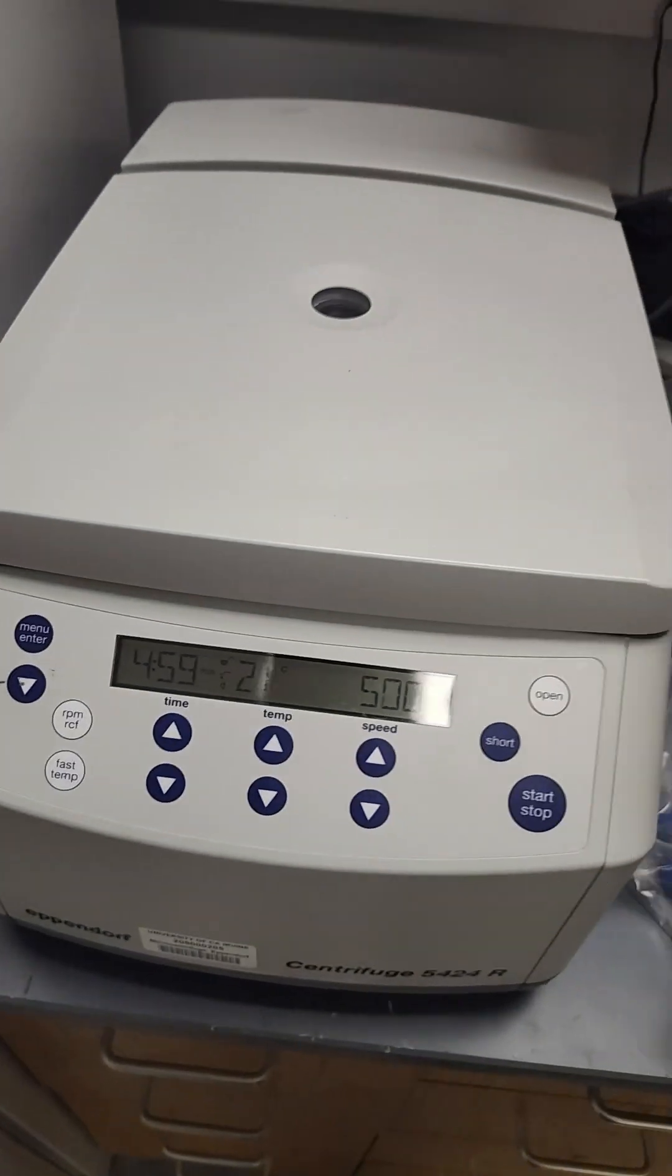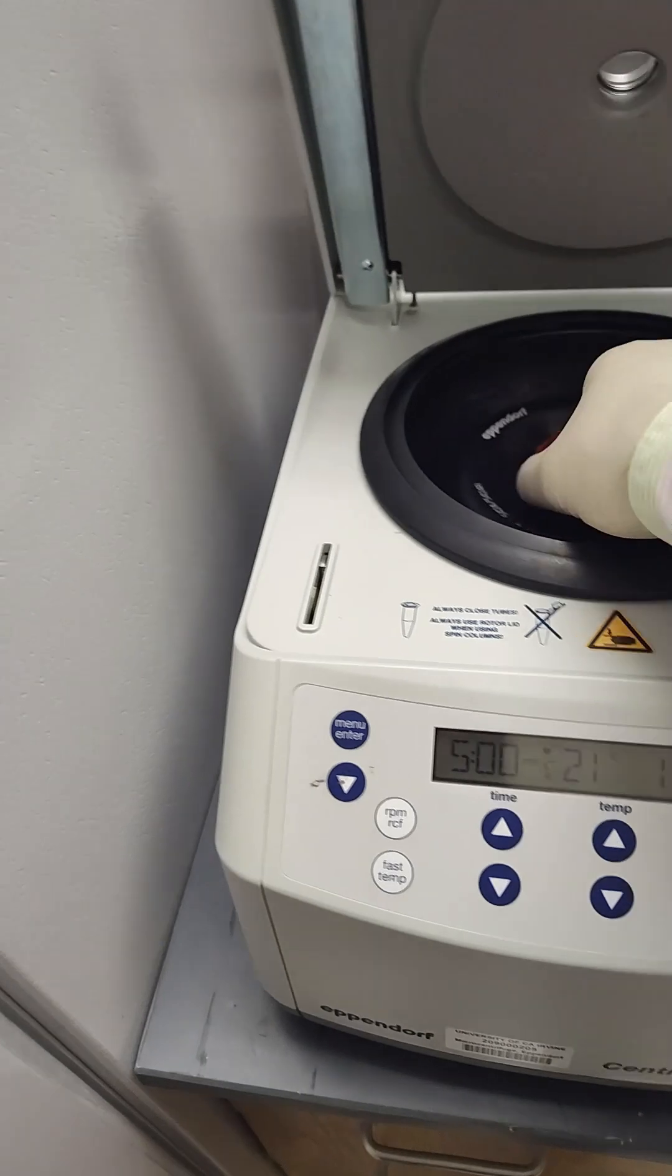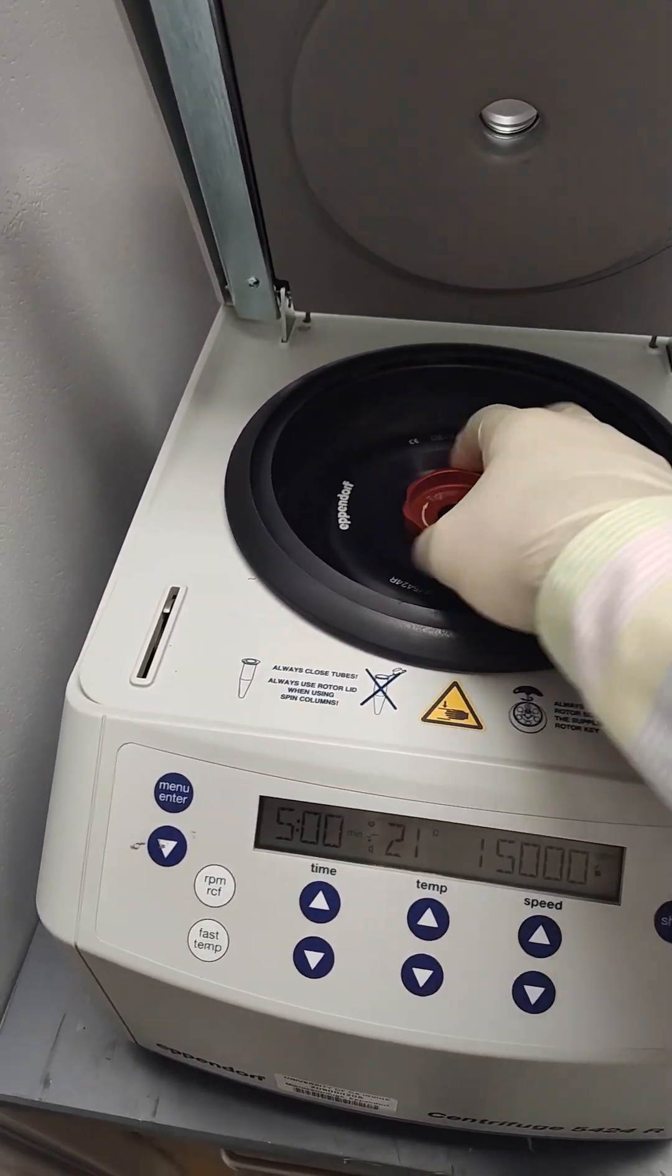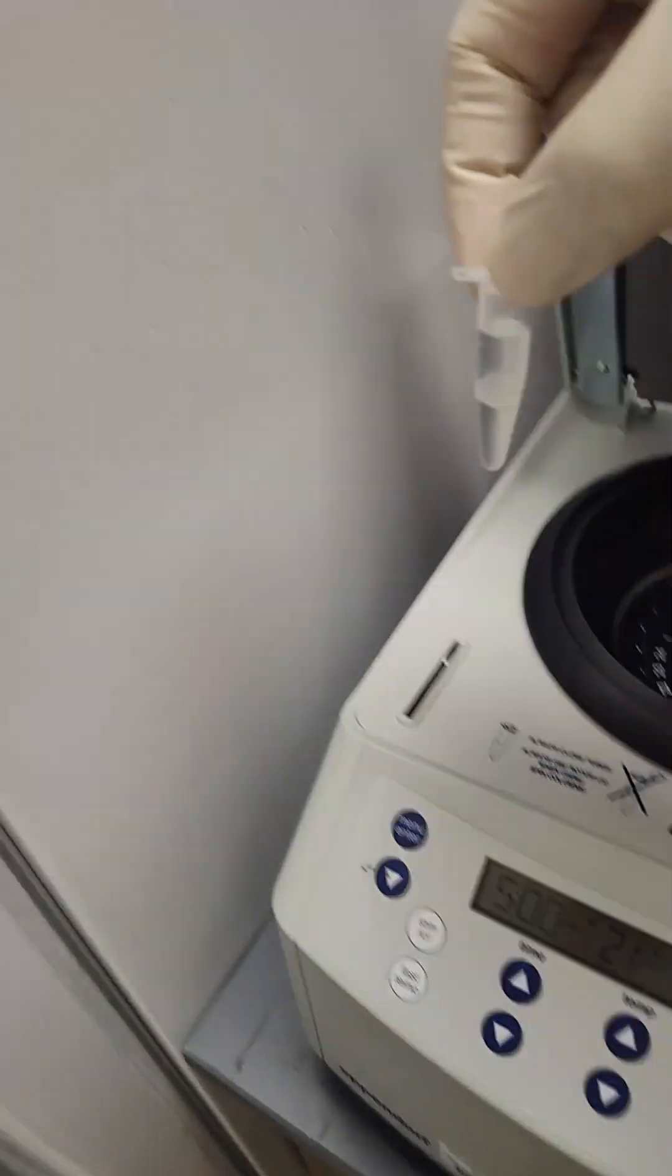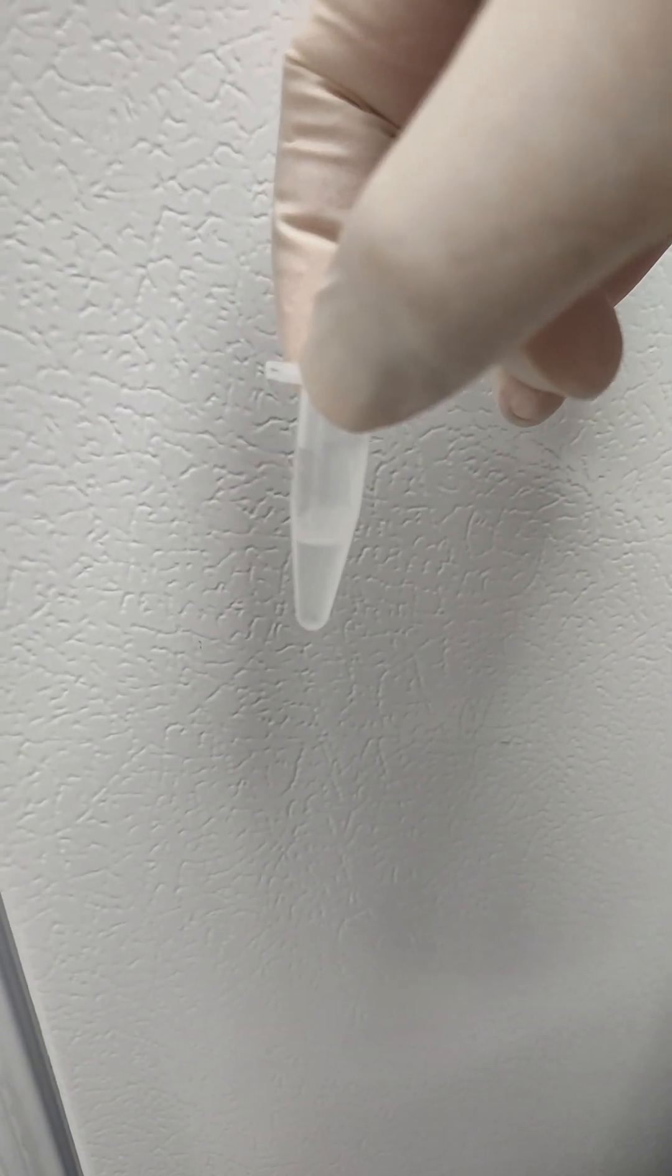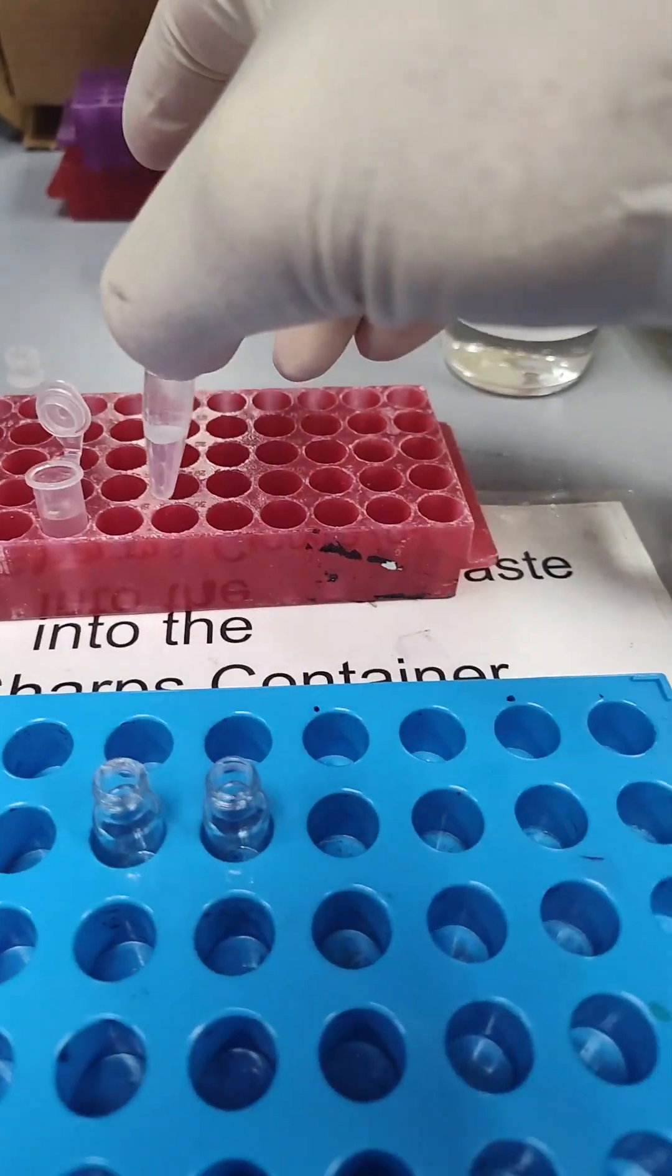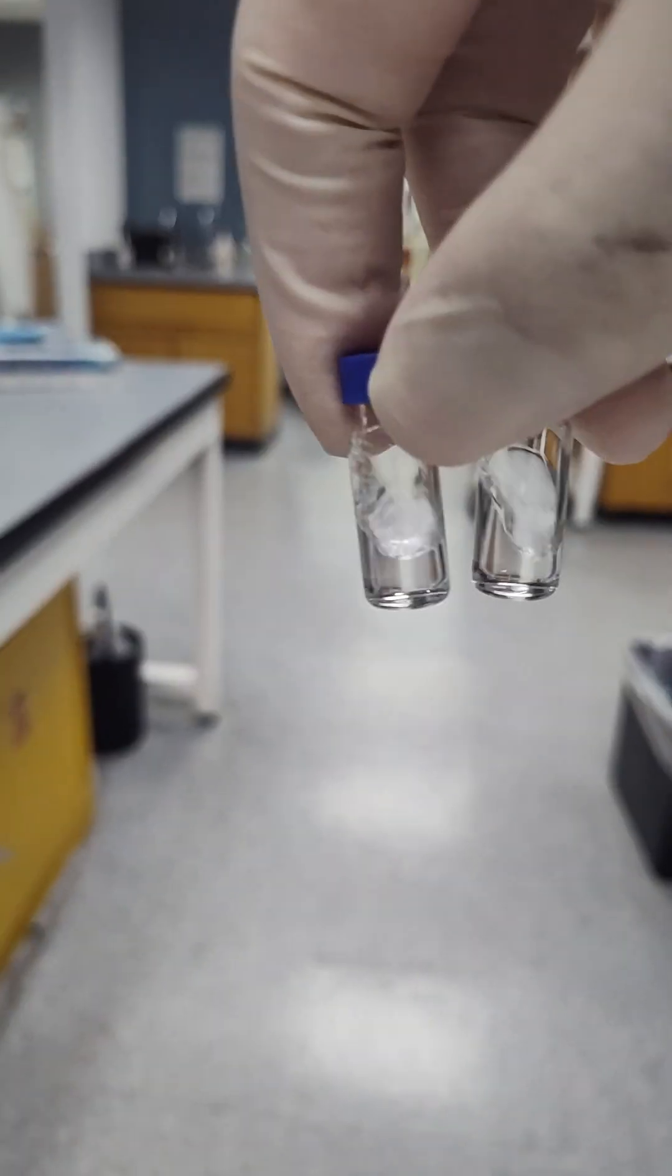Boom, boom on the centrifuge. All right, we go. Hopefully these guys split out real nice. That's good split, not much interface. I mean there's some, but it looks pretty typical. Now we're just going to pull the bottom layer of DCM and then dilute it out in the tube. There they are.